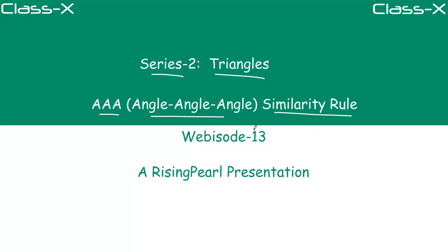So the first one is AAA, also known as angle, angle, angle similarity rule. So what do we mean by that? Friends, let's take a look.